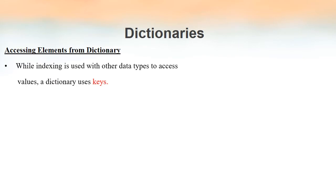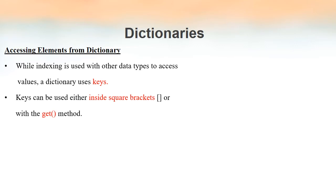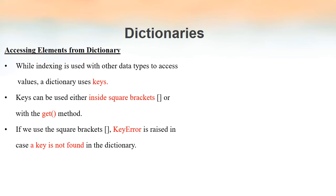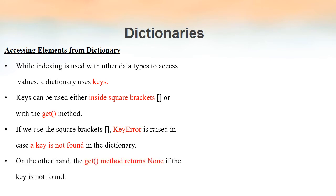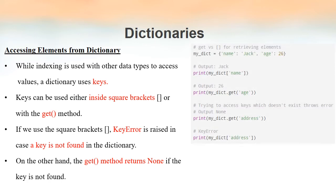Now we will see how to access elements from a dictionary. For tuples, lists, and strings we use an index, but in case of a dictionary we can make use of the keys. Keys can be used within square brackets or inside the get() method as a parameter. If the key is not found and you are using square brackets, a KeyError will be generated; if you are using the get() method, it will return None.